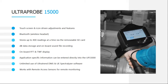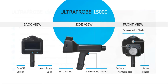Looking at the outside features: on the far left you have the power button — press and hold it and you'll see the UE Systems logo come up, then once powered up you'll see the home screen. There's the headset jack, and on the side view the SD card slot and the instrument trigger. Unlike some other Ultra Probes where you keep your finger on the trigger, with the Ultra Probe 15,000 you only need to squeeze the trigger when you're ready to get the decibel level or decibel level and temperature.